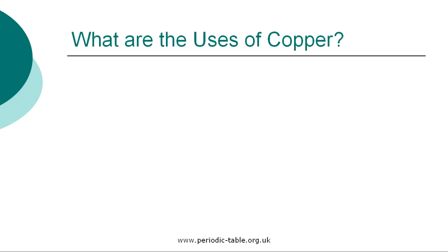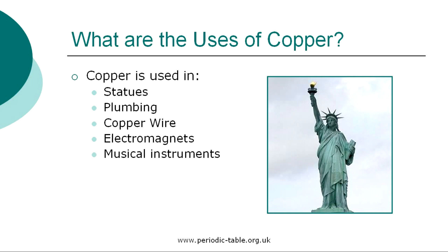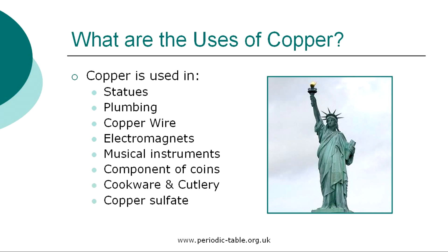Once the properties of an element have been established, we then have the ability to identify how it can be used. The Statue of Liberty is made of copper about the thickness of two pennies put together. Its distinctive green color is due to its familiar patina green coating, which has formed on the surface of the statue due to exposure to the elements. Copper is used for electrical wiring, water piping, coins, and corrosion-resistant parts, including the copper tubing used by plumbers. Copper sulfate is used as a parasiticide in aquariums, and in the treatment of foot rot in cattle.